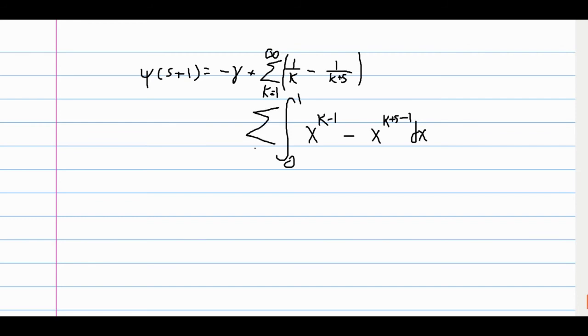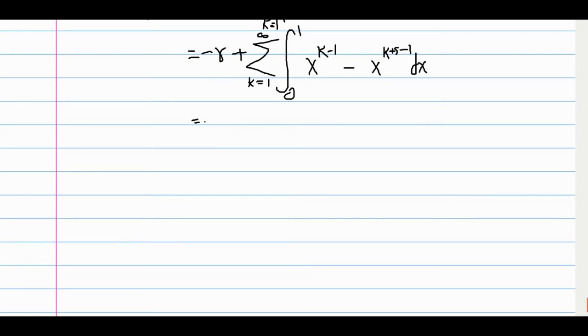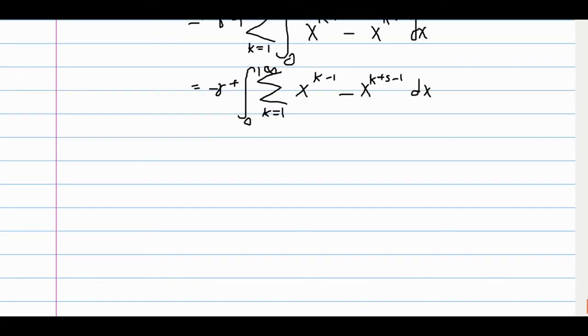So, we still have the sum outside, and since these are just polynomial terms, we can switch the sum and the integral to get this expression. So, now what we can do is factor out x to the k minus 1, and what we get is 1 minus x to the s.